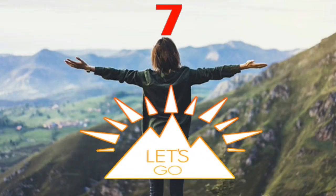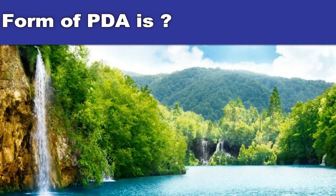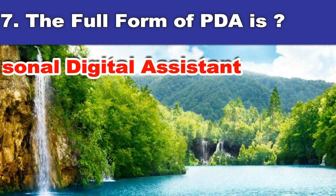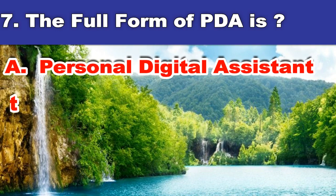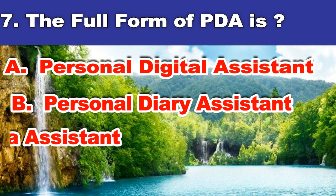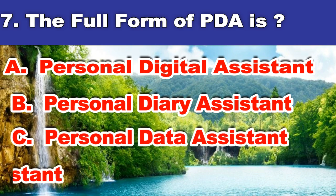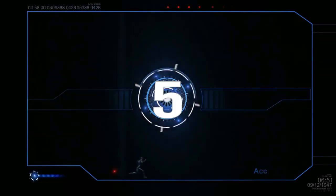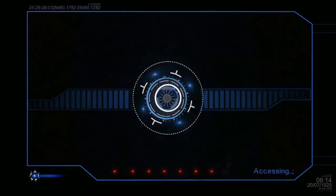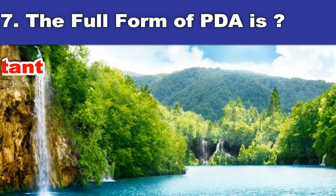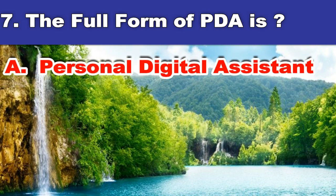Seventh question. The full form of PDA is? A. Personal digital assistant. B. Personal diary assistant. C. Personal data assistant. D. Professional data assistant. And the answer is: personal digital assistant.